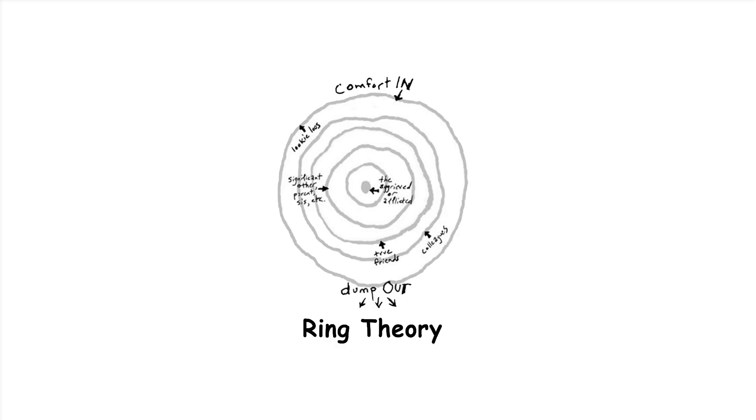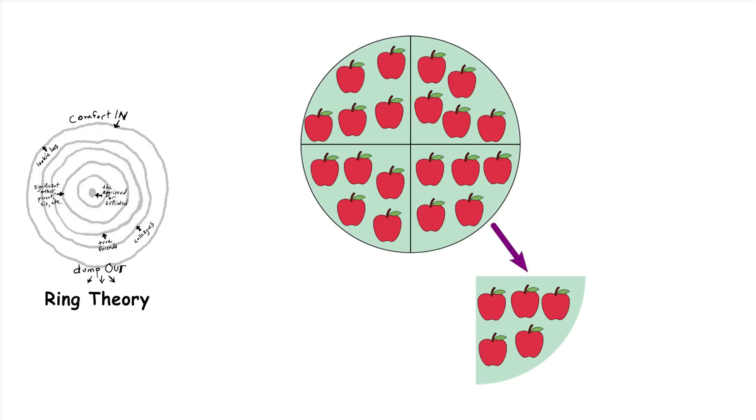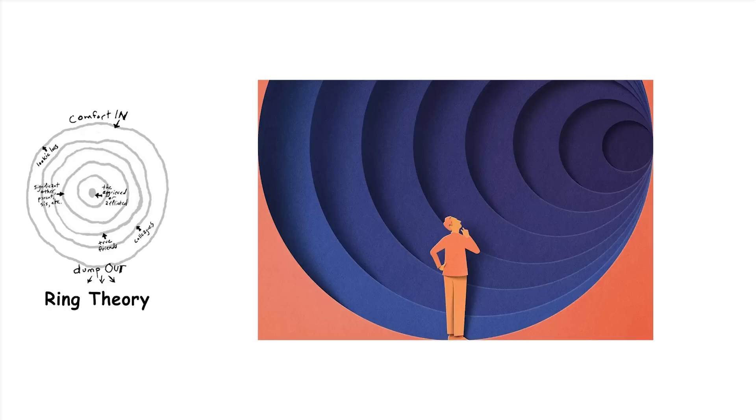Ring theory. Ring theory studies structures called rings, which are sets equipped with two operations: addition and multiplication. Rings generalize the arithmetic of whole numbers. Imagine a collection of objects where you can add and multiply them together, following some rules. Ring theory helps mathematicians understand these structures and how they behave under addition and multiplication.